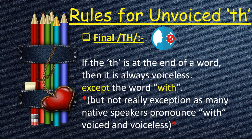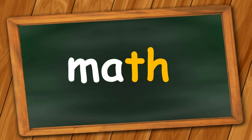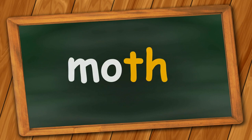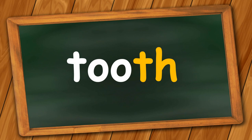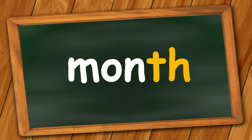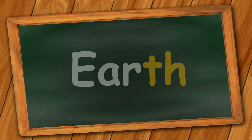Rules for final voiceless TH words: if the TH is at the very end of a word, then it is always voiceless, except the word 'with.' Here, TH being at the end of the word 'with' is pronounced with the voiced TH — 'with,' not 'with.' For example: math, moth, month, earth.